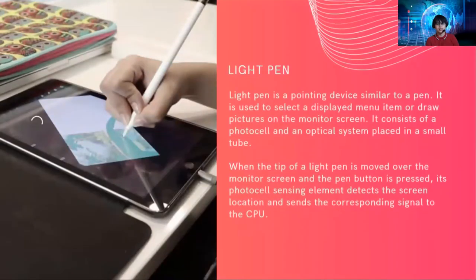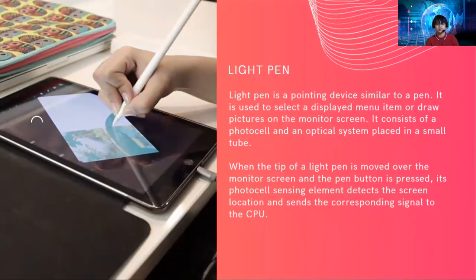Next is the light pen. The light pen is a pointing device similar to a pen. It is used to select a displayed menu item or draw pictures on the monitor screen. It consists of a photo cell and an optical system placed in a small tube. When the tip of a light pen is moved over the monitor screen and the pen button is pressed, its photo cell sensing element detects the screen location and sends the corresponding signal to the CPU. Some mobile phones like the Galaxy Note use a similar light pen device.